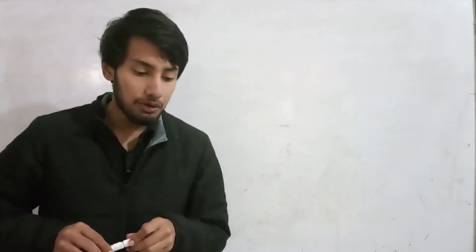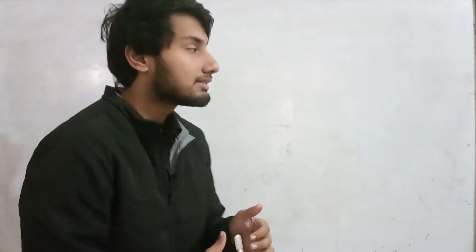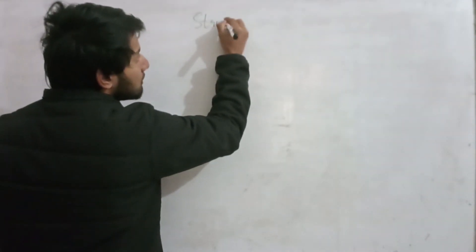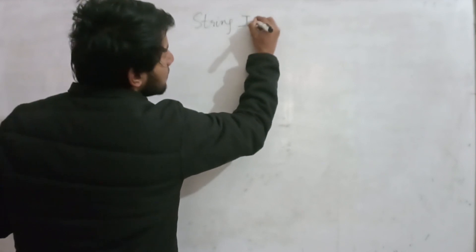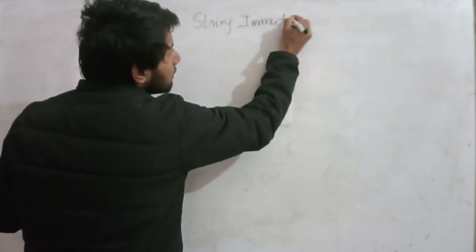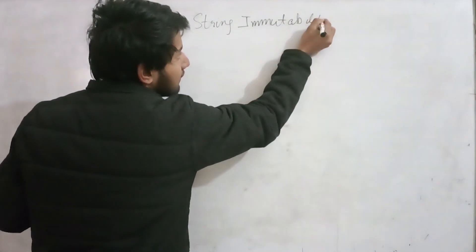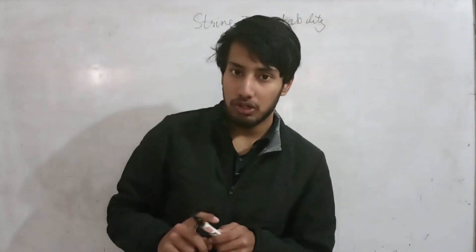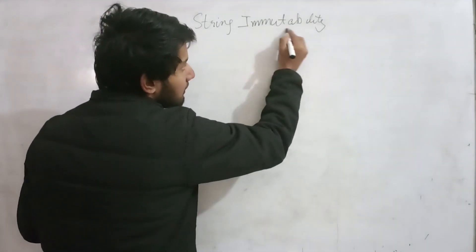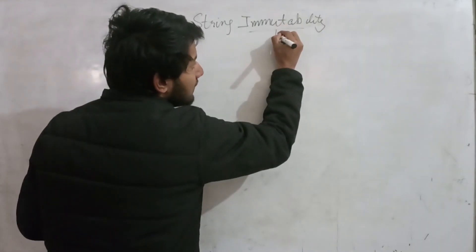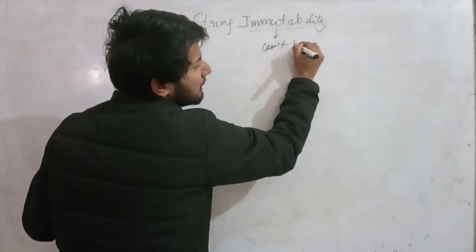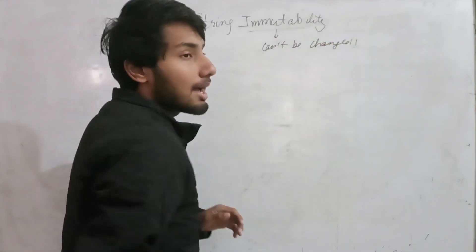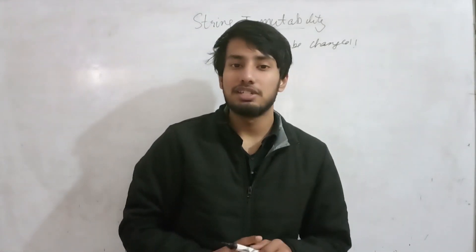When it comes to string immutability, what does this term actually mean? String immutability basically means that string objects are immutable. Immutability means can't be changed — but I'm not saying a string value can't be changed; I'm saying string objects can't be changed. We'll have a look at exactly what I'm trying to tell you.